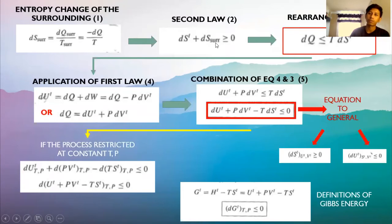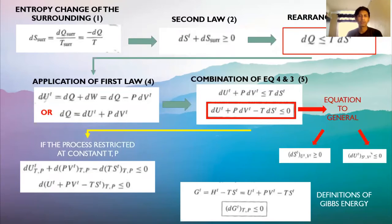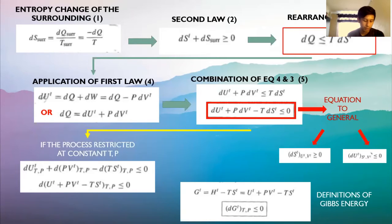The second law requires that dS + dS_surroundings ≥ 0. After rearrangement, we get: dQ ≤ T dS. This is equation 3. Applying the first law gives equation 4. Combining equations 3 and 4 yields the general equation. Because this relation involves properties only, it must be satisfied for any change in a closed system of uniform temperature and pressure, without restriction to the conditions of mechanical and thermal reversibility assumed in the derivation.